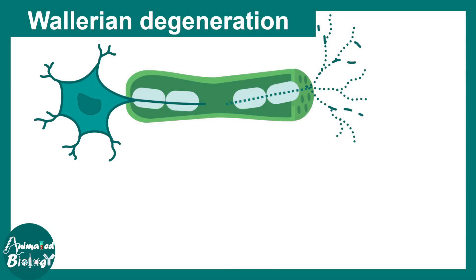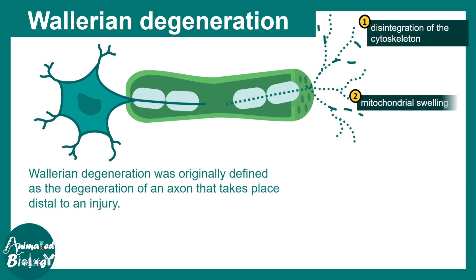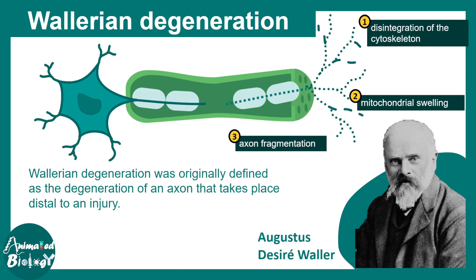In this video, we'll talk about the process of Wallerian degeneration. Wallerian degeneration is also known as injury-induced neurodegeneration, and it is defined by the degeneration of the axon at the distal site of the nerve injury. It is further characterized by disintegration of the cytoskeleton underlying the axon, mitochondrial swelling, and axon fragmentation. This phenomenon was initially reported by Augustus Waller, and based on his name, it was known as Wallerian degeneration.